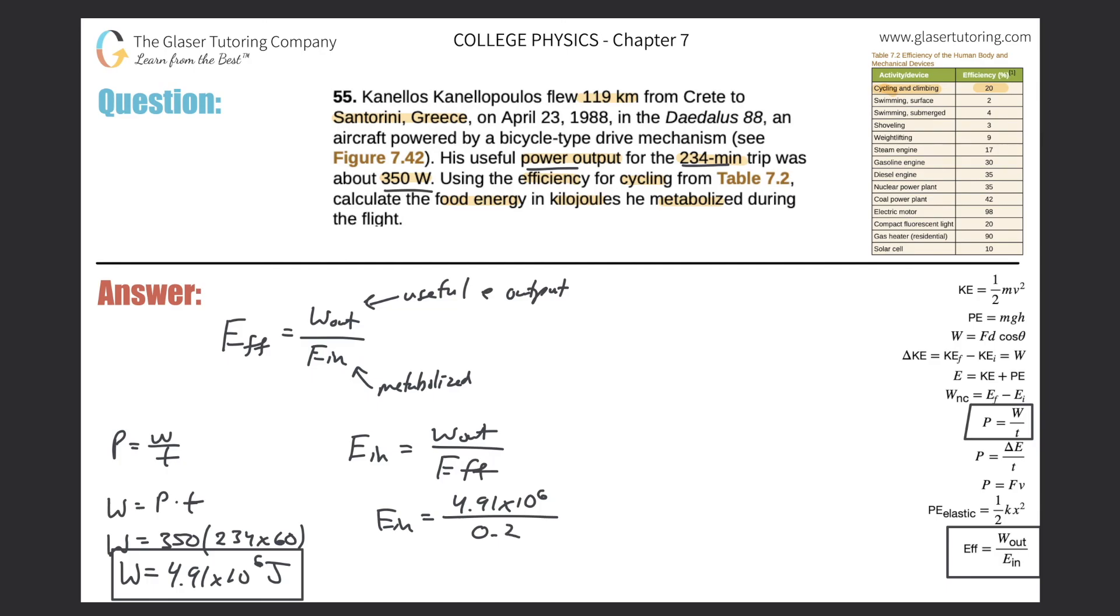You got to convert the percent to decimal. Just move the imaginary decimal over here on the upper right two places to the left. So the energy in now would simply be, just do this calculation. So we get about 4.91 times 10 to the 6 divided by 0.2. So we get about 2.46 or so times 10 raised to the 3, looks like 7. Times 10 raised to the 7, and that now is in terms of joules.